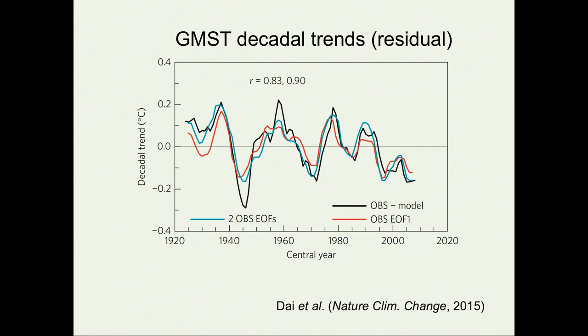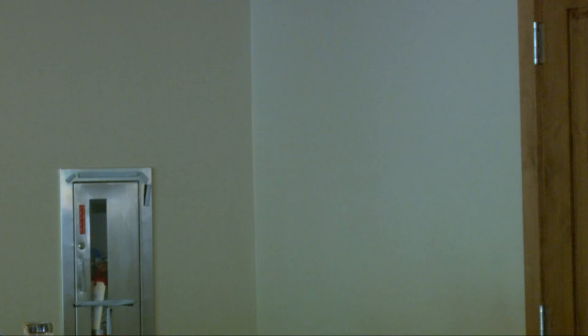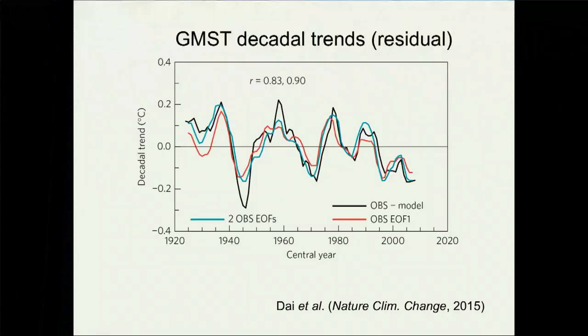It's not perfect. The imperfections represent the fact that we haven't captured all of the internal variability — we might be biasing some forced signal we thought we removed, or there might be some we didn't know we should capture. But you can notice how well we reproduce the hiatus. At the last point, the observed decadal trend and this reconstructed trend are spot on. So this seems to be a useful procedure.